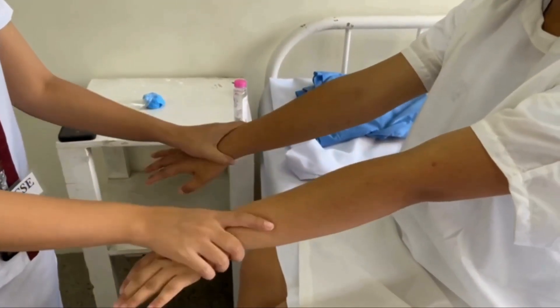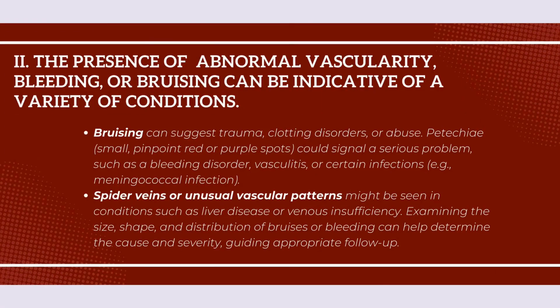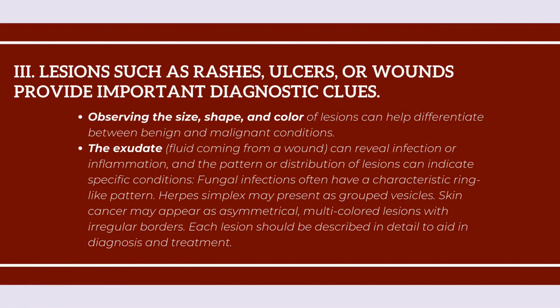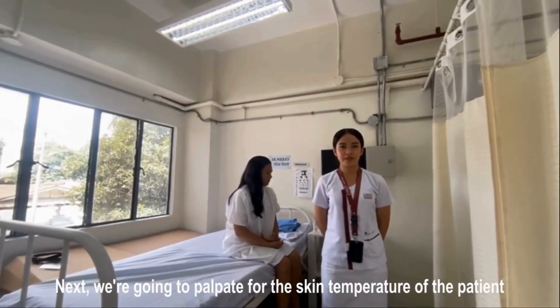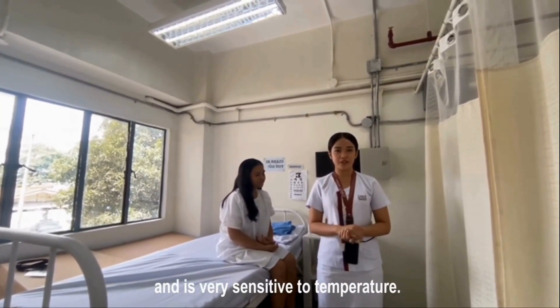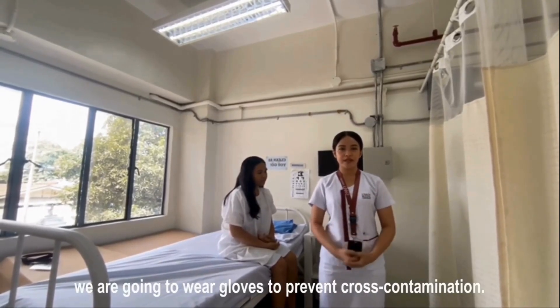This step is important because the overall skin color provides initial clues about the patient's health. Next, we're going to palpate for the skin temperature of the patient using the dorsal part of our hand, since it is less keratinized and is very sensitive to temperature. And if the patient has any open wounds or cuts, we are going to wear gloves to prevent cross-contamination.